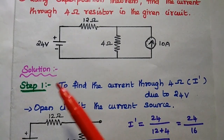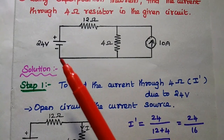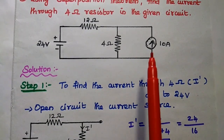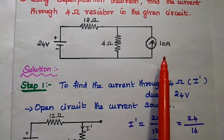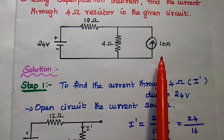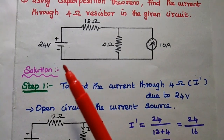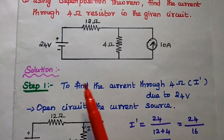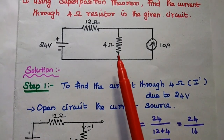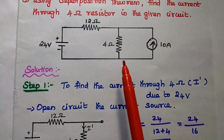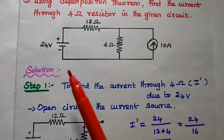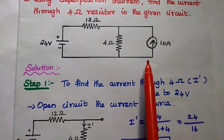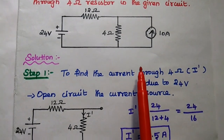Here in the first step, we are going to consider this voltage source alone — at that time the current source is open-circuited for further simplification. So here in the first step, we are going to find out the current through this 4 ohm resistor, that is I dash, due to only this 24 volt source, at the time the 10 ohm current source is open-circuited.